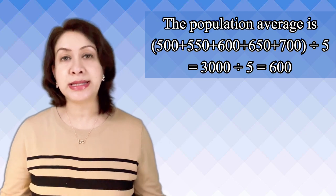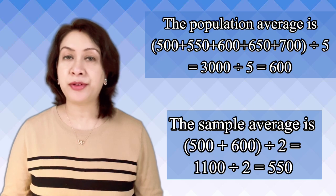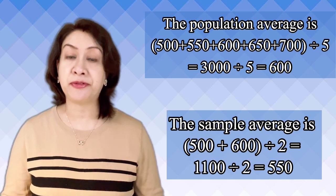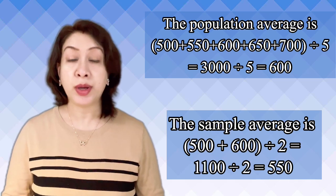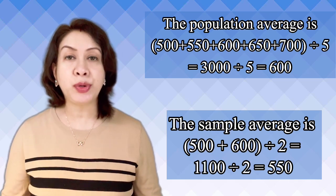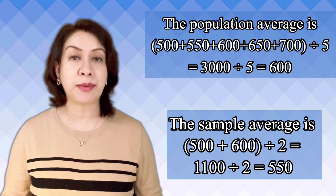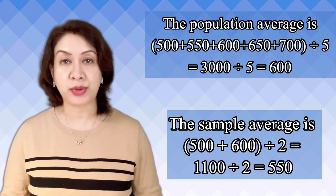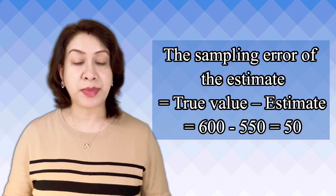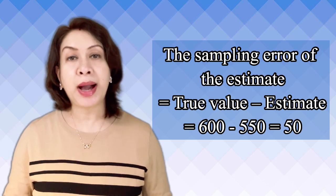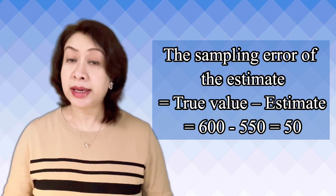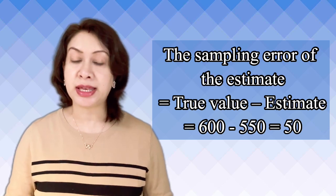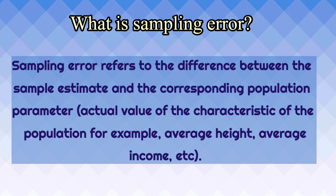Now let us take a sample of 2, who are receiving rupees 500 and 600 as pocket money. The sampling average will be 500 plus 600 divided by 2, which is equal to 550. The difference between the population average and the sampling average is the statistical error. So the sampling error of estimate equals true value minus estimated value, which is 600 minus 550, equal to 50.